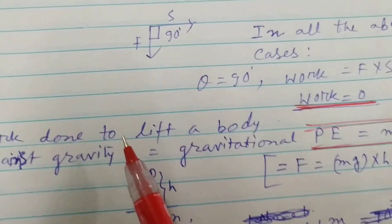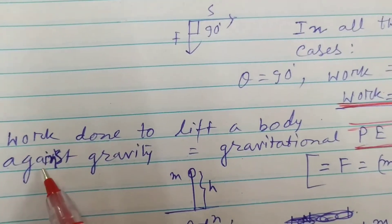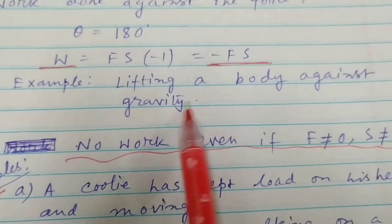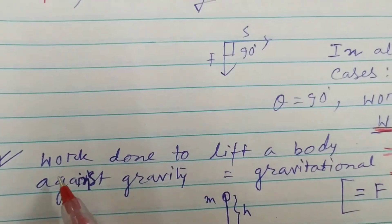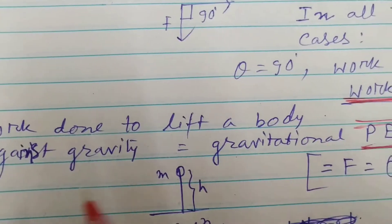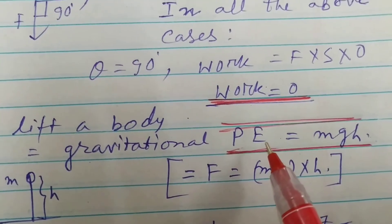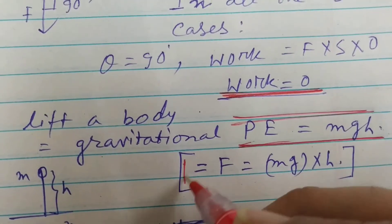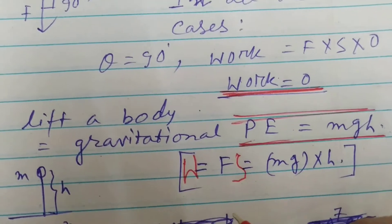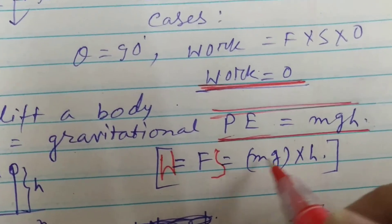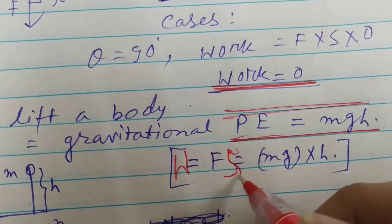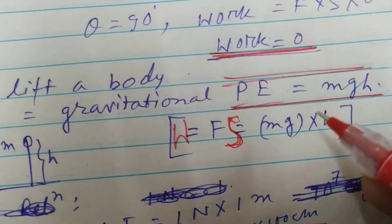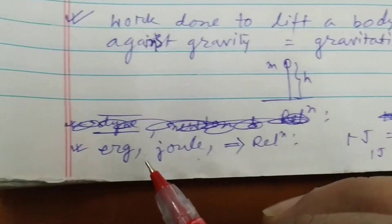Next case: work done to lift a body against gravity, which is called gravitational potential energy. How will you calculate it? Work done W is equal to F times s, where F is mg — the weight of the body — and s is the displacement, which equals h, the height. So the expression is W equals mgh.